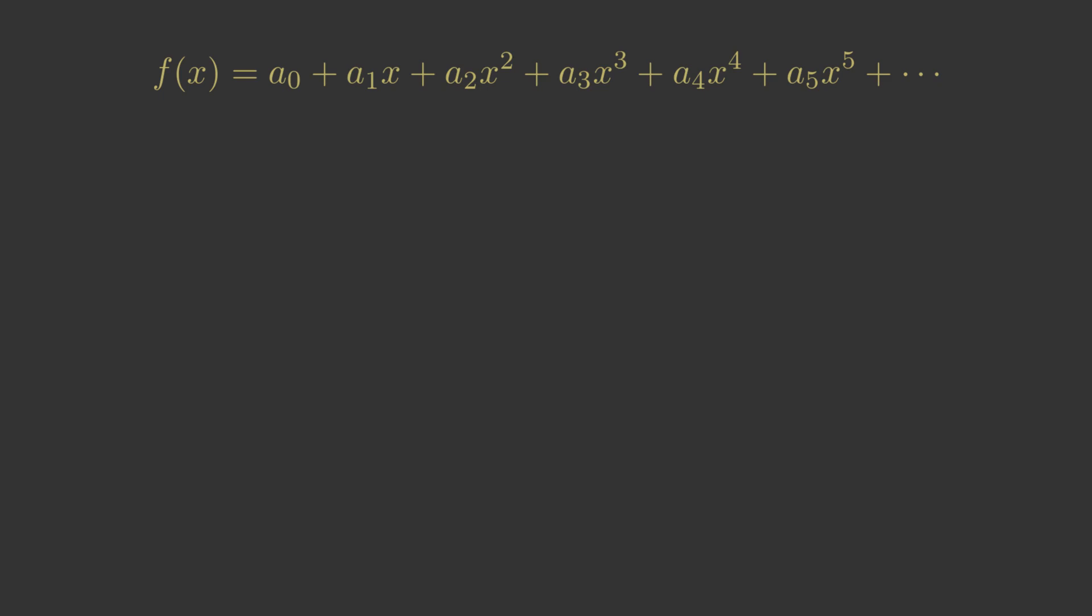We can find the first value a0 very easily. If we set x to 0, all the terms involving x become 0, so the function becomes f of 0 equals a0.